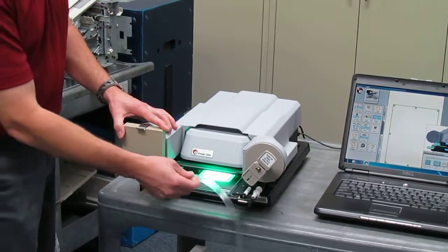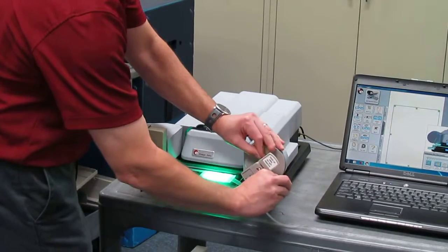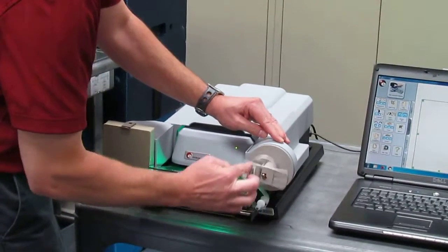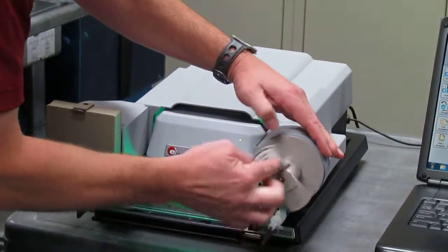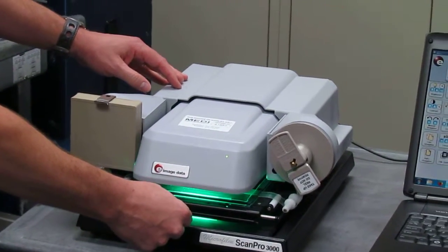Next we thread our leader through the carrier onto the take up side. We want to gather together any slack and then we can push the carrier back into the scanner.